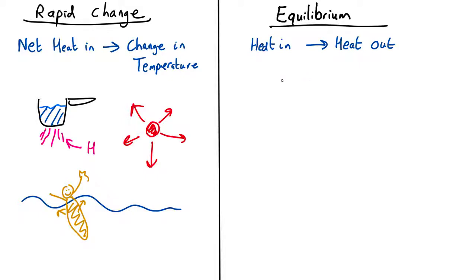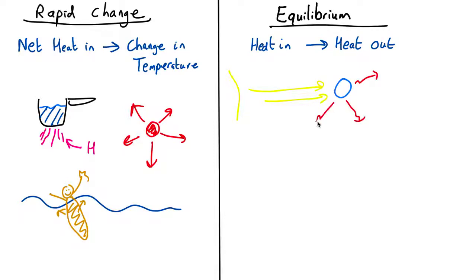Equilibrium on the other hand happens on longer timescales typically. One example would be a planet like our own. It has a sun nearby and light from the sun hits it. If that were all that happened, the energy from the sun would cause it to get warmer and warmer until it evaporated. But luckily the planet is also radiating energy in the infrared. So if you want to work out how hot the planet is going to be on average, you'd set those equal — write down an equation for how much sunlight energy comes in, set it equal to the infrared radiation going out, and solve for the temperature.